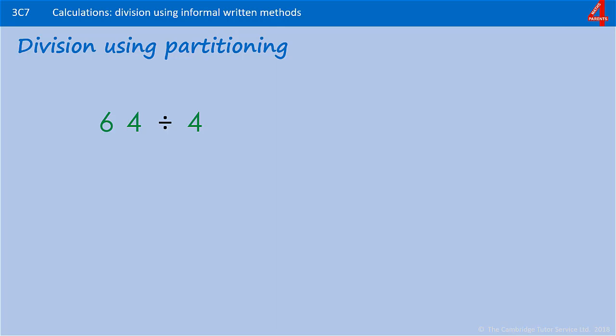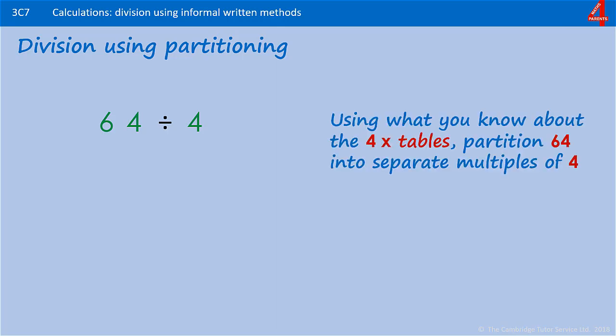But they might not know how many fours go into 64. Partitioning is really useful here, using what you do know about the four times table. So we're going to start by looking at 64 and thinking what's the highest multiple of four I can think of that will go into 64.